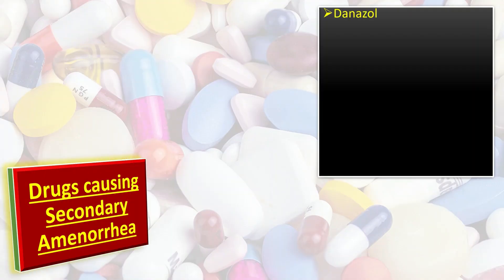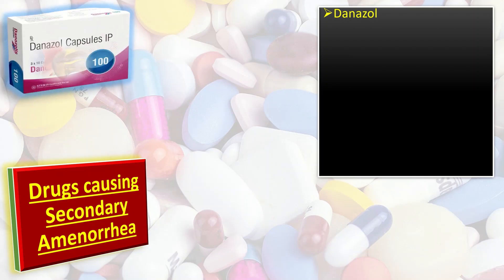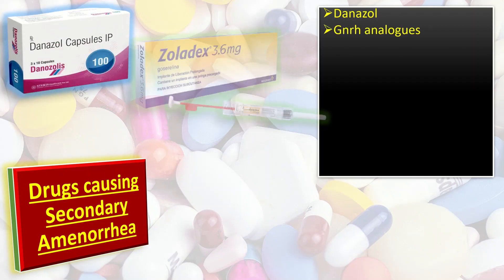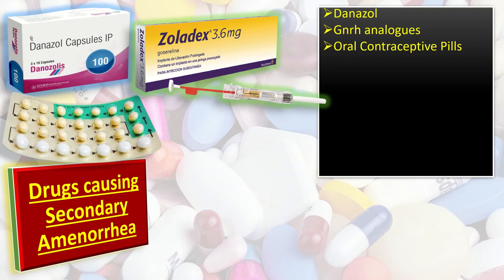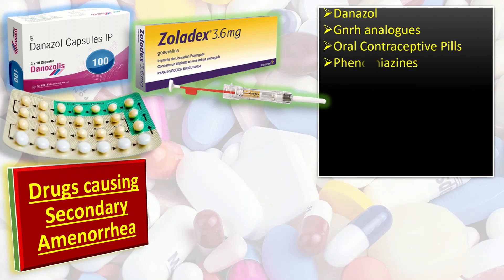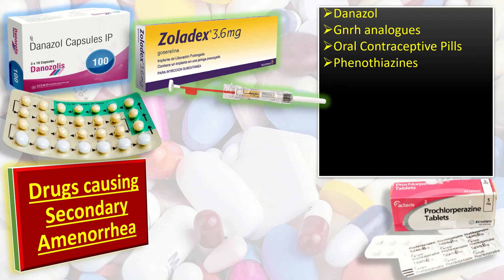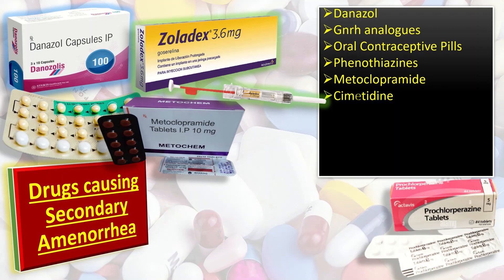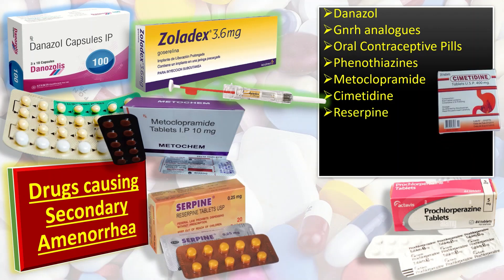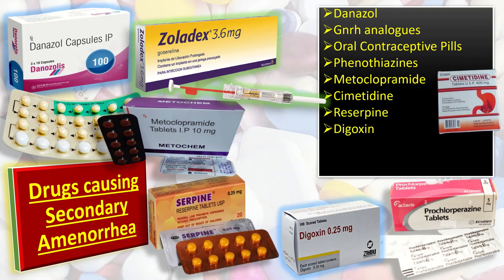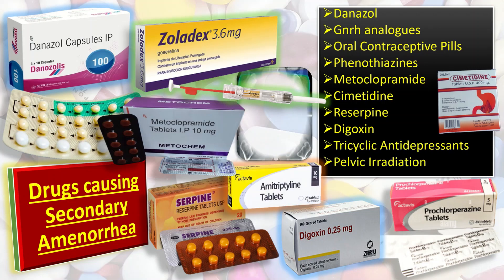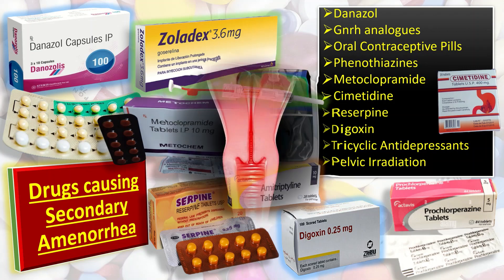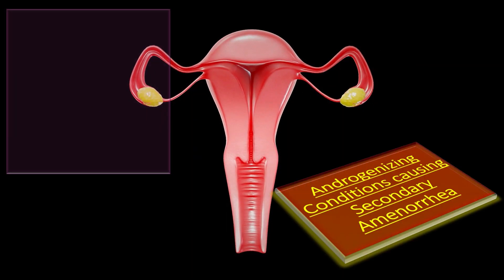What drugs are responsible for causing secondary amenorrhea? We have a list of drugs: first, danazole; GnRH analogues like goserelin; oral contraceptive pills; phenothiazines like prochlorperazine; metoclopramide; cimetidine; reserpine; digoxin; tricyclic antidepressants; and pelvic irradiations.